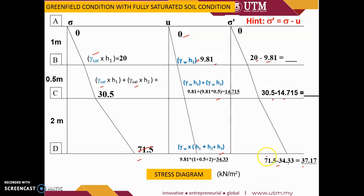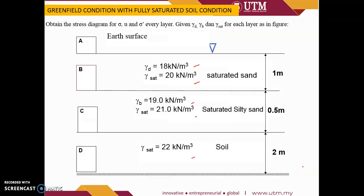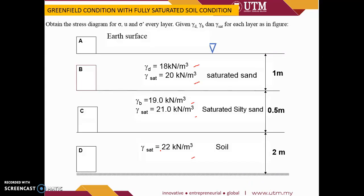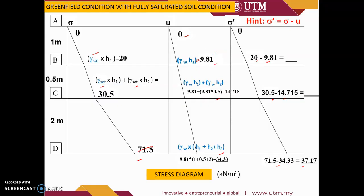When you compare to the previous exercise, with the higher groundwater table the effective stress is much smaller. Previously we got 51.88 kPa, but with the groundwater table at the surface we get the effective stress at D much smaller at 37.17. This demonstrates the concept that with an increment of pore water pressure in the soil, the effective stress is reduced.